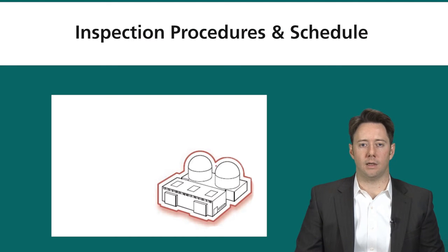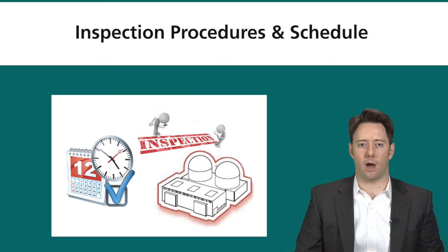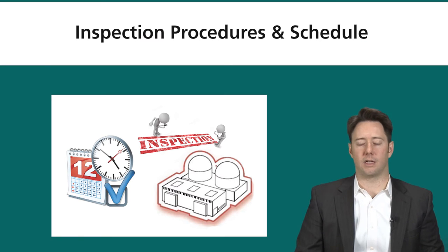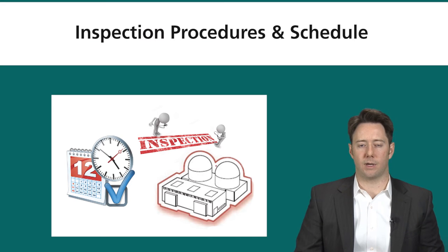The final step of the safeguards application is determining inspection procedures and schedule, which is again facility specific. This must be worked out with the operator to meet the needs of both the operator and IAEA inspectors, including protocols for resolving inconsistencies and establishing schedules for nuclear material accountancy verification inspections and design inspection verifications.